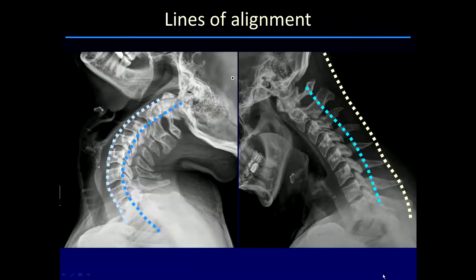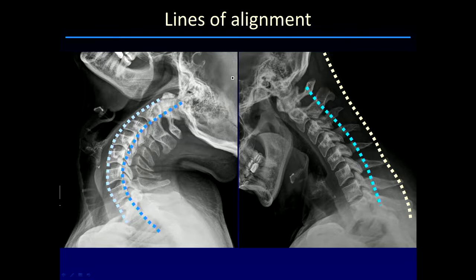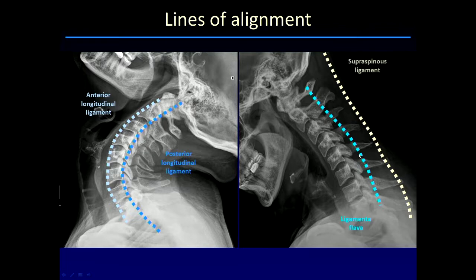Another thing to do right at the beginning is to take a look at your lines of alignment. At the vertebral bodies, we have an anterior and a posterior line. At the vertebral body margins, we have a spinal laminar line at the junction of the spinous process and the lamina. There is also a line at the tips of the spinous processes, which has a lot of variation and I don't find terribly helpful. The posterior vertebral body line and the spinal laminar line are critical because those are the lines that encompass the spinal canal, and all of these lines correspond to different ligamentous regions of the cervical spine.